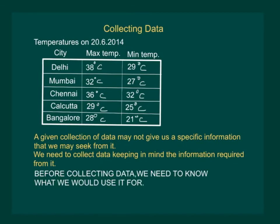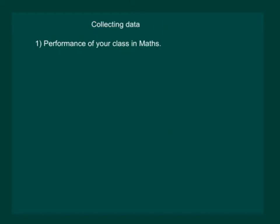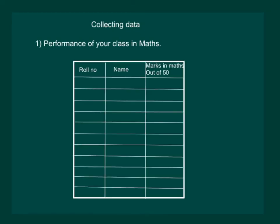That is, before collecting data, we need to know what we would use it for. For example, if your teacher wants to study the performance of your class in maths, she needs to make a table which would mention the roll number, the name of the student and the marks obtained by the student out of 50 in mathematics. And she may not include the marks obtained by the student in other subjects.